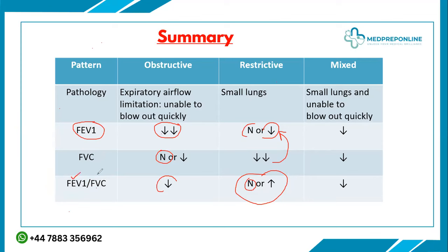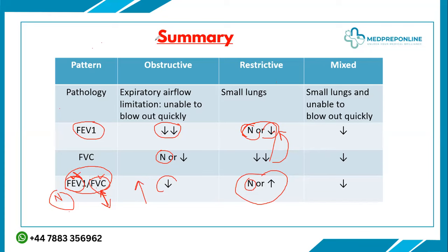If both FEV1 and FVC decrease proportionally, the ratio stays normal. In restrictive disease, if FEV1 is normal and FVC is decreased, the denominator (FVC) decreases while the numerator stays normal, so the ratio actually increases. Therefore, in restrictive pattern the ratio is usually normal or can be increased — it does not decrease like in obstructive disease.